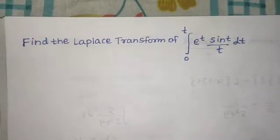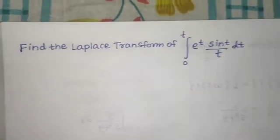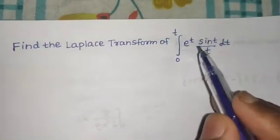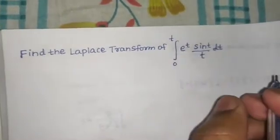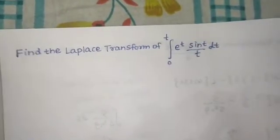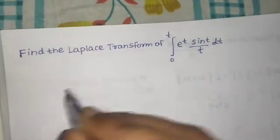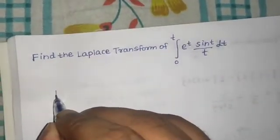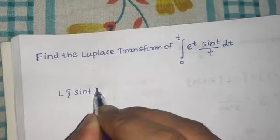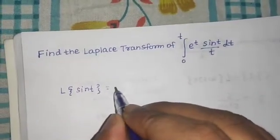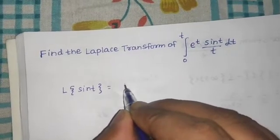Let's find the Laplace transform of the integral from 0 to t of e^t multiplied by sin(t)/t. We'll break this question into pieces. First, we find the Laplace of sin(t). You know Laplace of sin(at) is a divided by s² + a². Here a = 1, so it will be 1 divided by s² + 1.